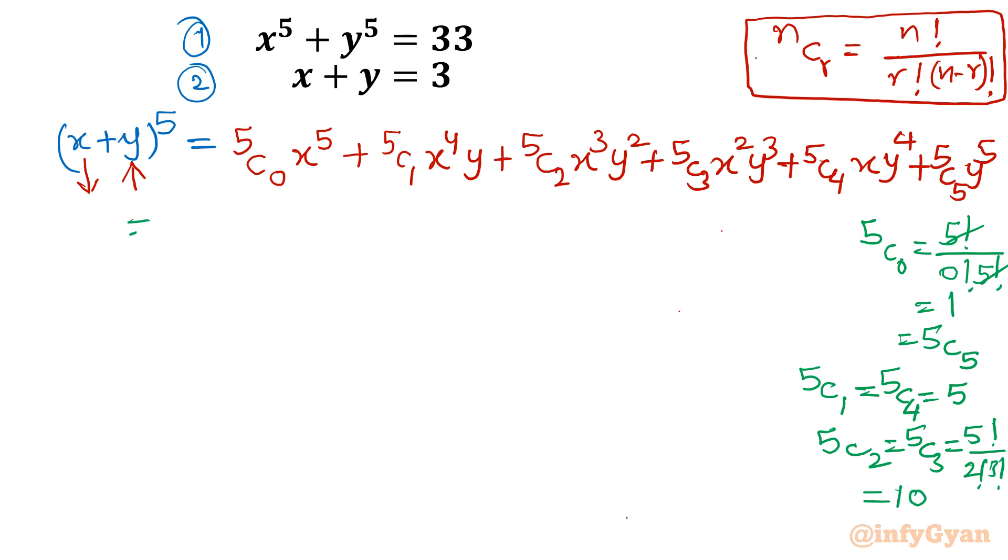Now I am going to put the values. So expansion finally will become x power 5 plus 5 x power 4 y plus 10 x power 3 y squared plus 10 x power 2 y cubed plus 5 x y to the 4 and last term would be y power 5 because 5c5 is 1. Now left hand side, because of x plus y equal to 3, so left hand side is 3 power 5.